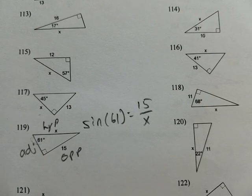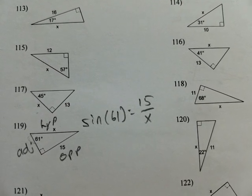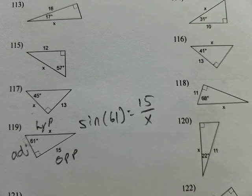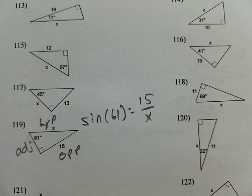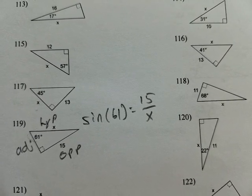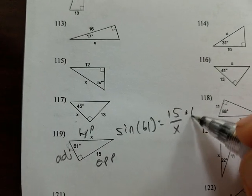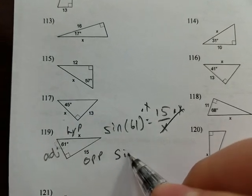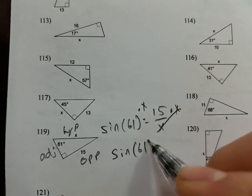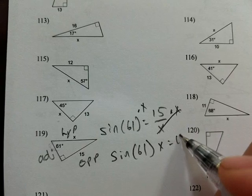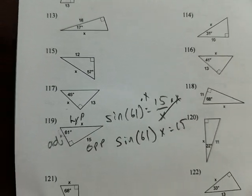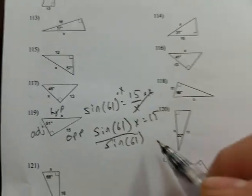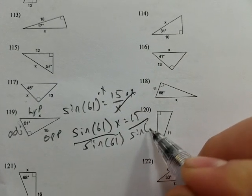All right, now we know sine of 61 is just a decimal. So we say that's some number equals 15 over X. To solve it, we multiply both sides by X to get it out of the bottom. We'll have sine of 61 times X equals 15. Now to solve for X, we just divide both sides by sine of 61.